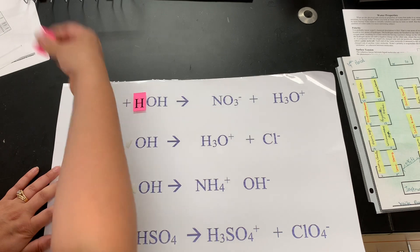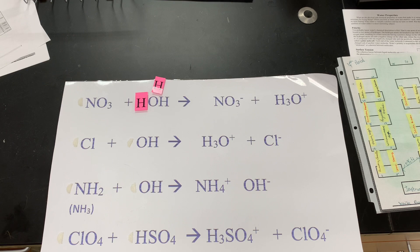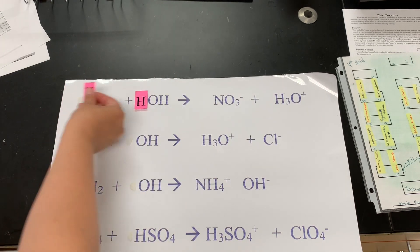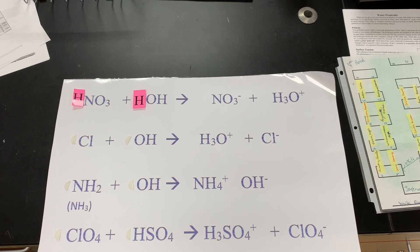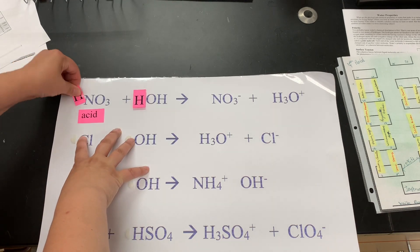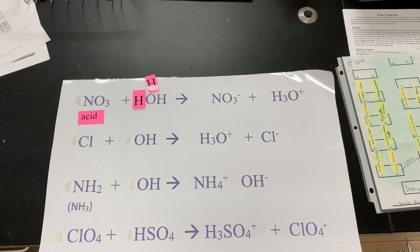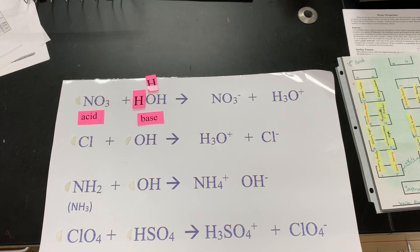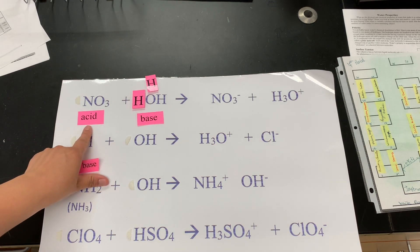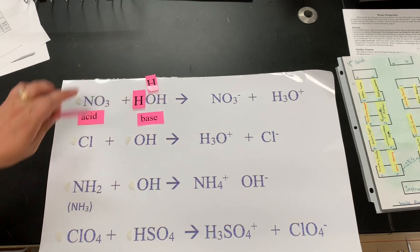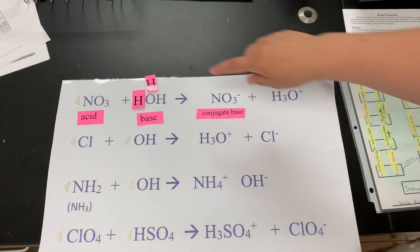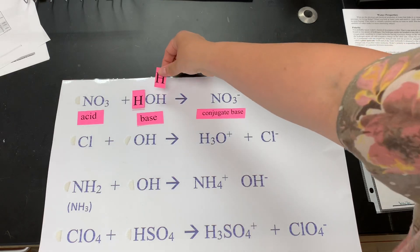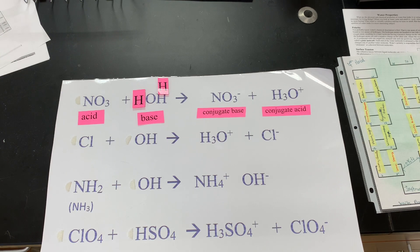In our first equation, HNO₃ (nitric acid) is going to give up its hydrogen to the water (HOH). So nitric acid is the acid — it is the hydrogen giver. The water is acting as the base here because it is accepting our hydrogen. After the acid loses its hydrogen, NO₃⁻ becomes the conjugate base. The water, having accepted a hydrogen, becomes H₃O⁺, which is our conjugate acid.